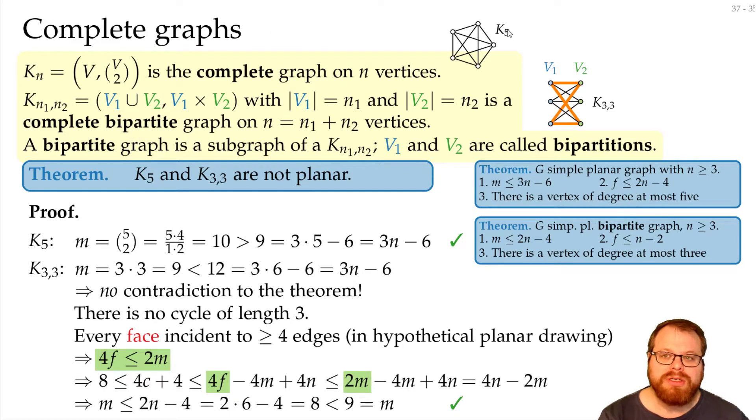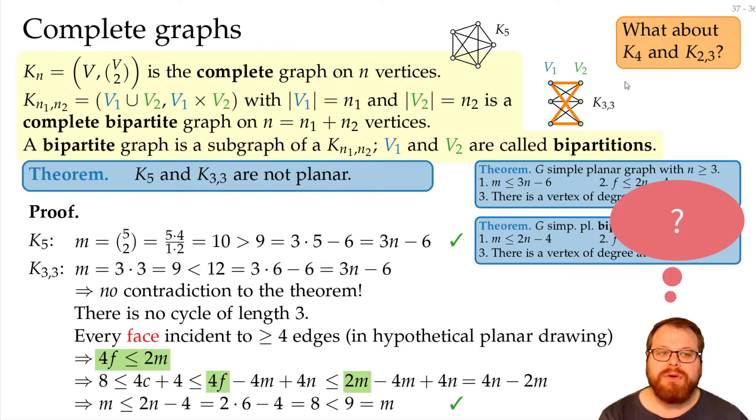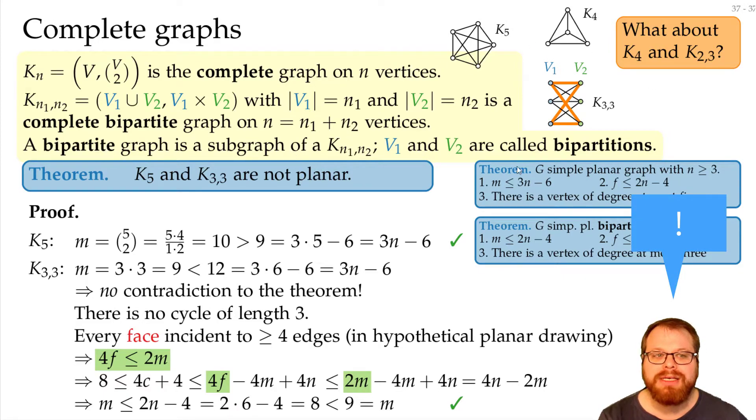But what about smaller complete graphs? What about the k4 and the k2-3? Are they planar or are they not? Well, they both are planar. And to show that we don't need any formulas, we can just present drawings. This is a planar drawing of k4, and this is a planar drawing of k2-3, and this already proves that these are planar graphs.